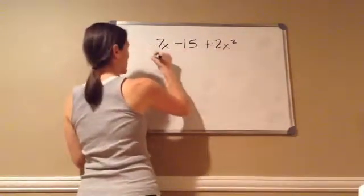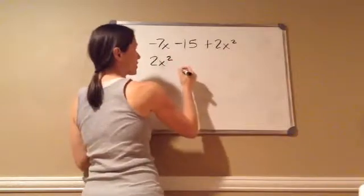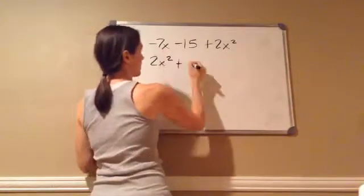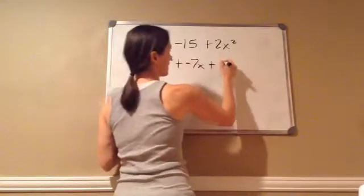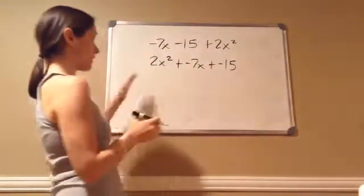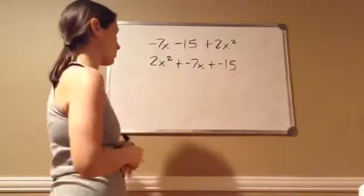So here's what we're going to do. We're going to put the 2x squared first. Then we're going to put the 7x, which is a negative 7x, plus, and then the 15, which is a negative 15, or a minus 15. And now I put it in the correct order.